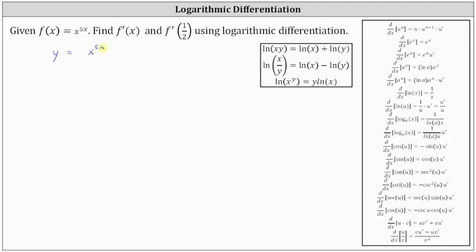Next, we will take the natural log of both sides of the equation. We can expand the right side using the power property of logarithms, which states that the natural log of x to the power of y equals y times the natural log of x. So the natural log of x to the power of 5x equals 5x times natural log x, giving us the equation: natural log y equals 5x times natural log x.